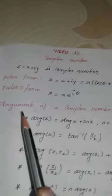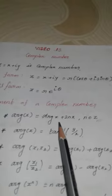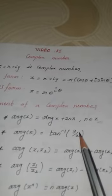Now I introduce the principle of argument of a complex number. The general argument of z is equal to the principal argument of z plus 2nπ, where n belongs to integers. The principal argument of z equals tan inverse of imaginary part divided by real part.